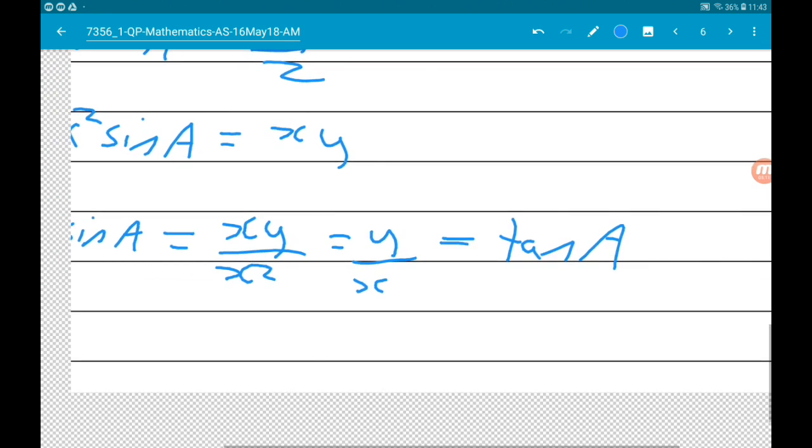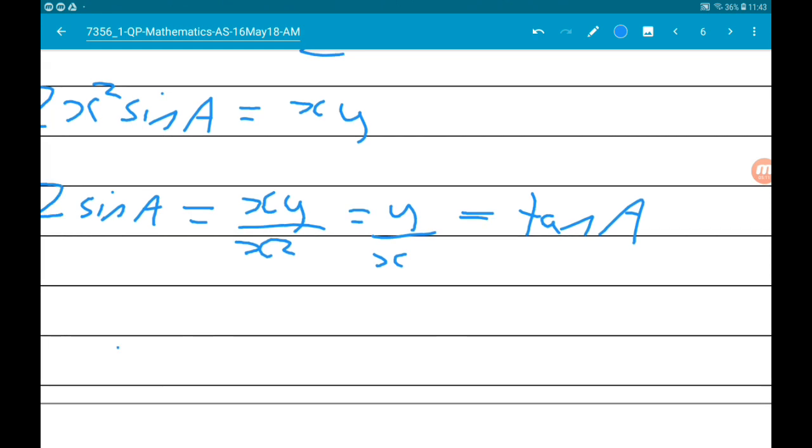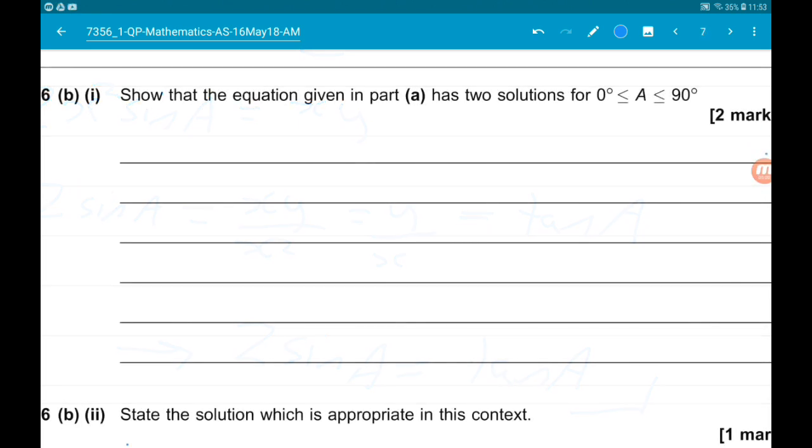Okay. So therefore, 2 sine A is equal to tan A. Cool. Okay. Now, part B wants us to show that the equation given in part A has two solutions for A between 0 and 90.